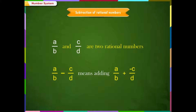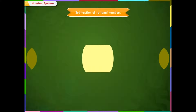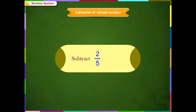Thus, the sum becomes: A/B minus C/D is equal to A/B plus (minus C/D), since the additive inverse of C/D is minus C/D. The following examples will illustrate the procedure to solve subtraction of rational numbers.